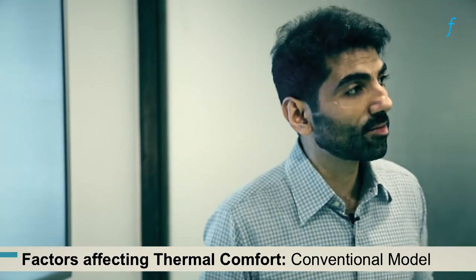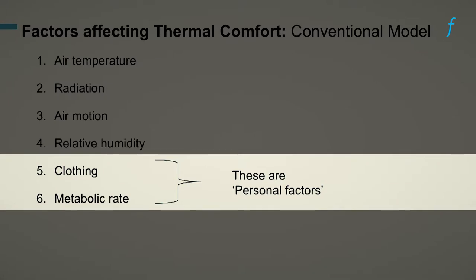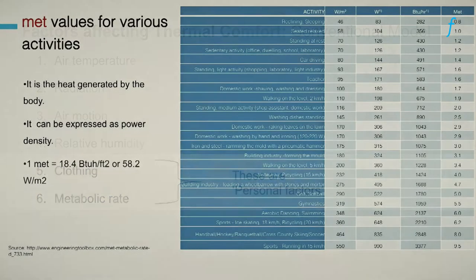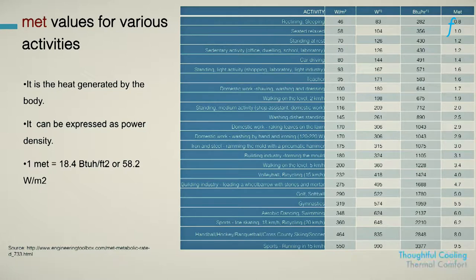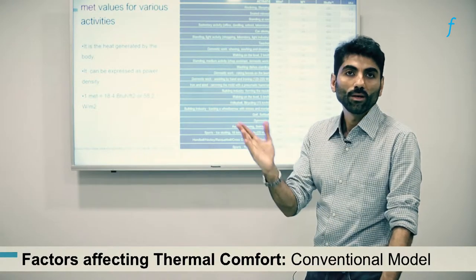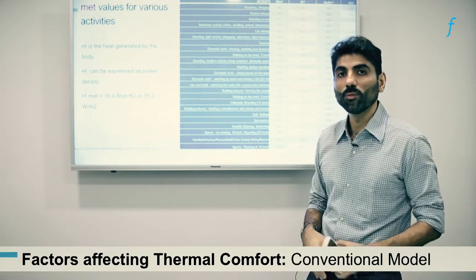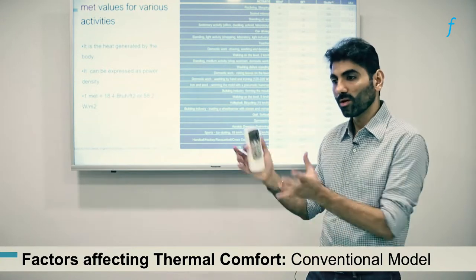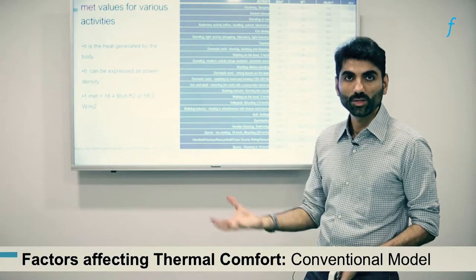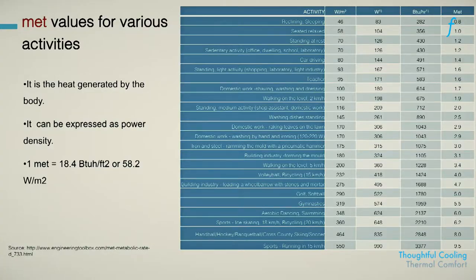These are values for different kinds of metabolic activities and the heat they generate. Depending on what kind of space you're designing—for example a gymnasium versus a training center for an IT company—the thermal comfort requirements will be very different, because metabolic activity in a gymnasium is much higher than in an office environment where the human body is not generating much heat.